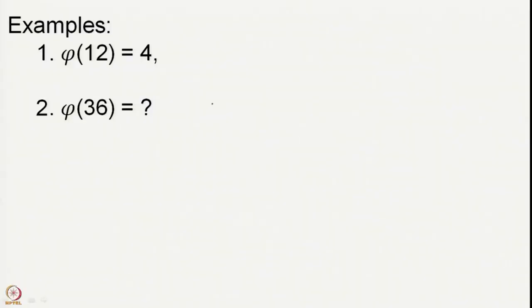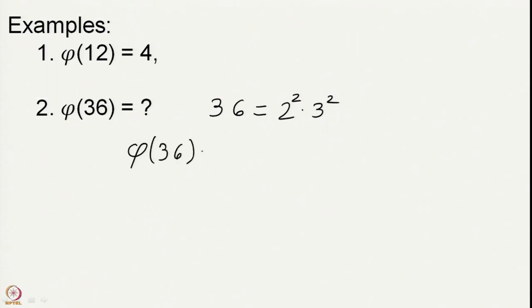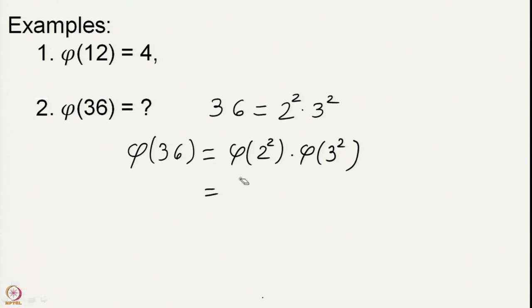Alright, your minute is up. We have the Euler phi function of the number 36. So 36 = 6² = 2² × 3², and we should therefore compute the phi value for both 2² and 3². φ(36) = φ(2²) · φ(3²). We computed φ(2²) in the last slide: 2² − 2 = 2. And φ(3²) = 3² − 3 = 9 − 3 = 6.